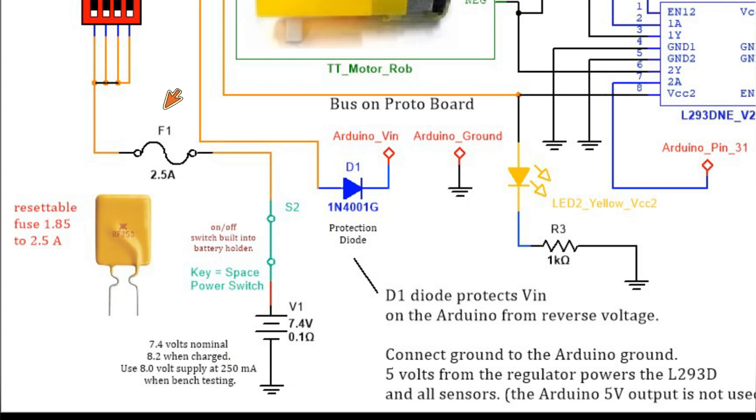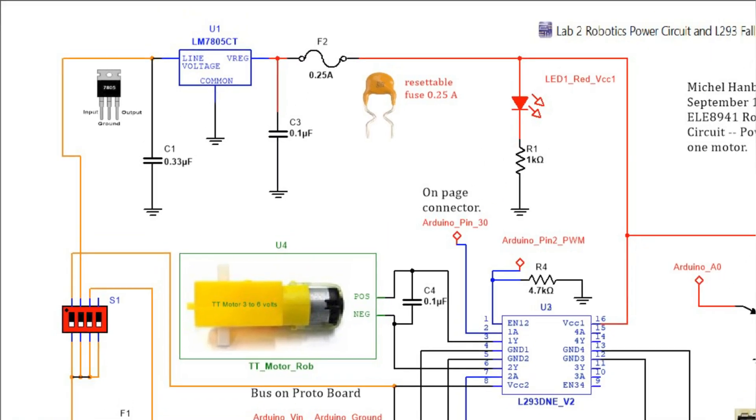Then it goes through this resettable fuse. Yours may be 1.85 amps, and if the fuse blows because of too much current, after it cools down it resets. Then we go to the switches, so the four inputs to the switches are all connected together to the supply from the battery.